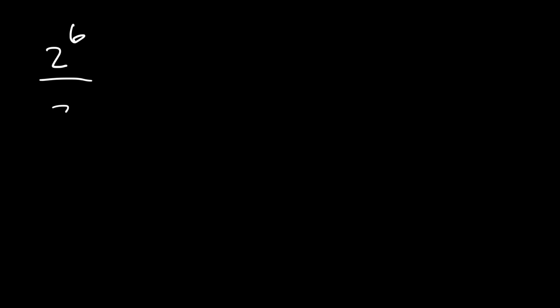Try this one. 2 to the 6 divided by 2 to the 3rd. What we need to do is subtract 6 and 3, which will give us 3. And 2 to the 3rd is 8. So that's the final answer.